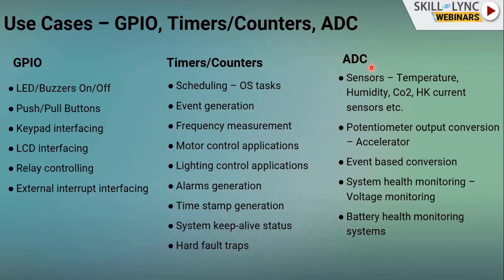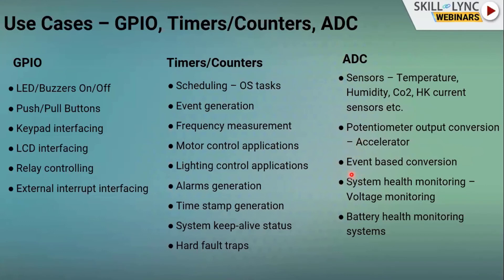For ADC, most sensors are analog — temperature sensors, humidity sensors, CO2 sensors, Hall effect current sensors. These sensors measure physical parameters and output an analog DC voltage or current. By monitoring that output voltage with the ADC, we can determine the measured value. For example, a potentiometer in an accelerator outputs a voltage proportional to the pedal position.